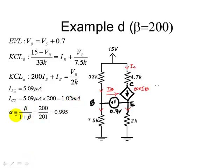And with that one, and a factor that we're going to call alpha, which is beta divided by 1 plus beta, 0.995, we can write that VCEQ, this voltage here, is going to be the total voltage, 15, minus the drop here, which is IC times 4.7 kilos, 1.02 milliamps times 4.7 kilos, plus the drop here, which is IE, which is going to be IC.